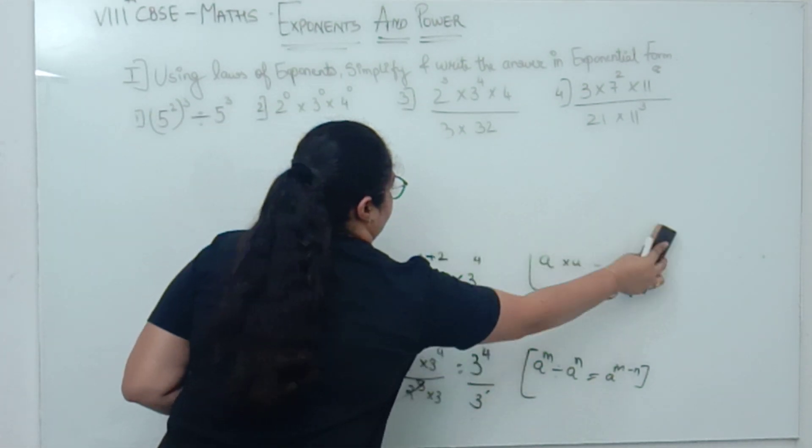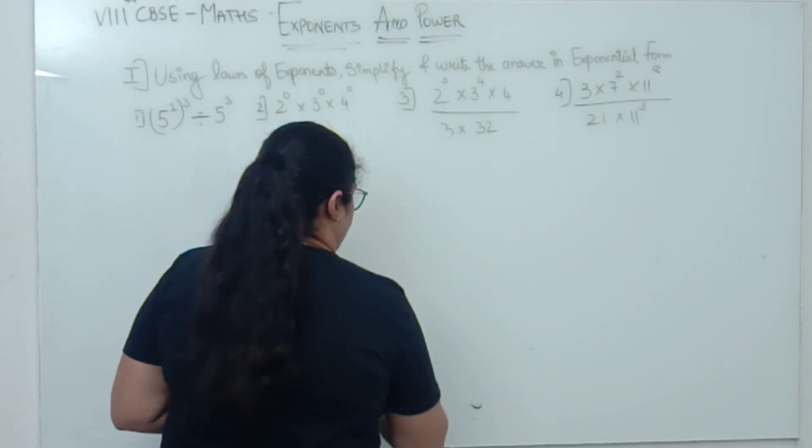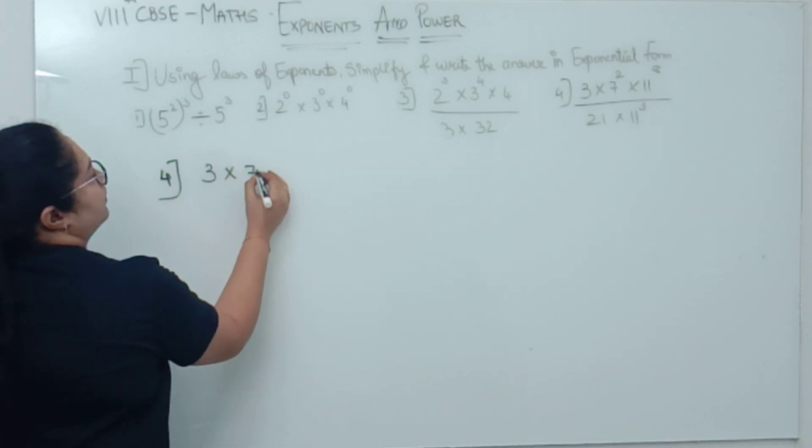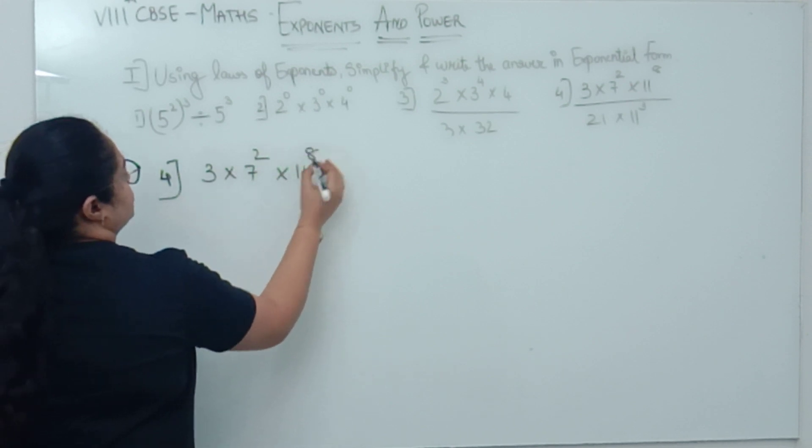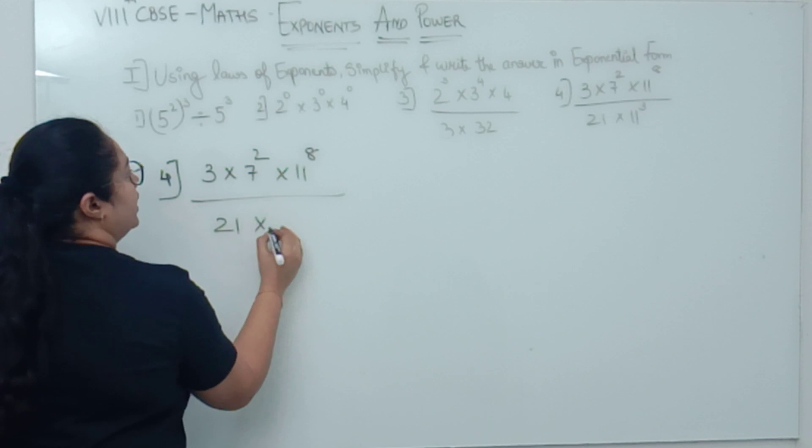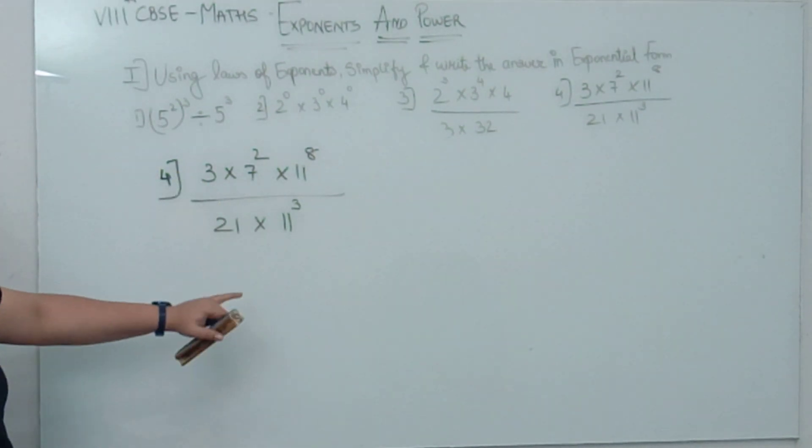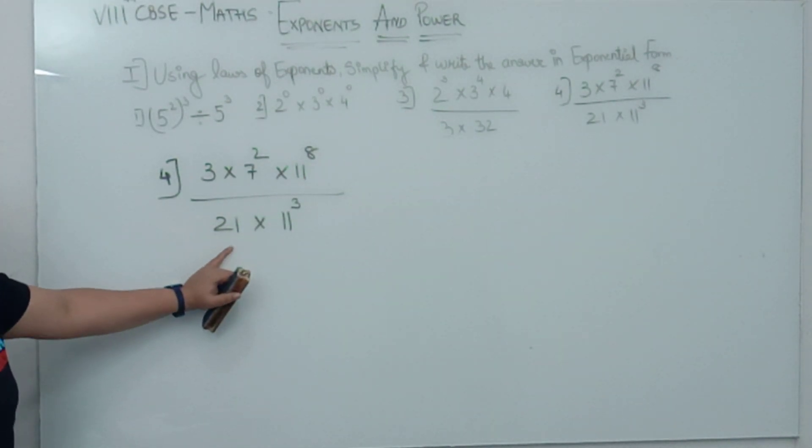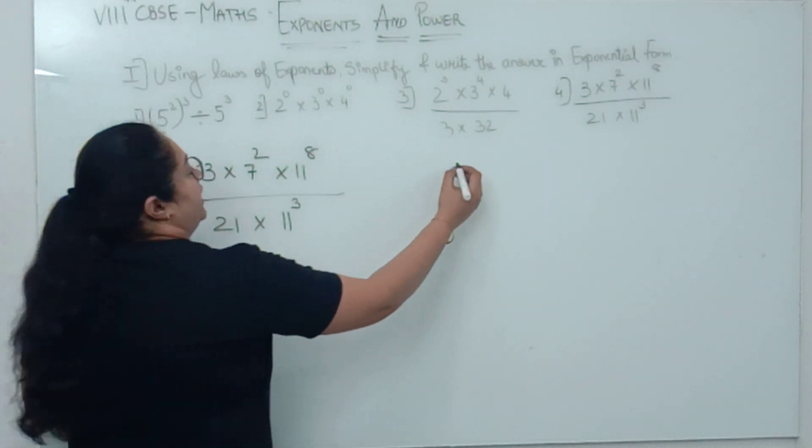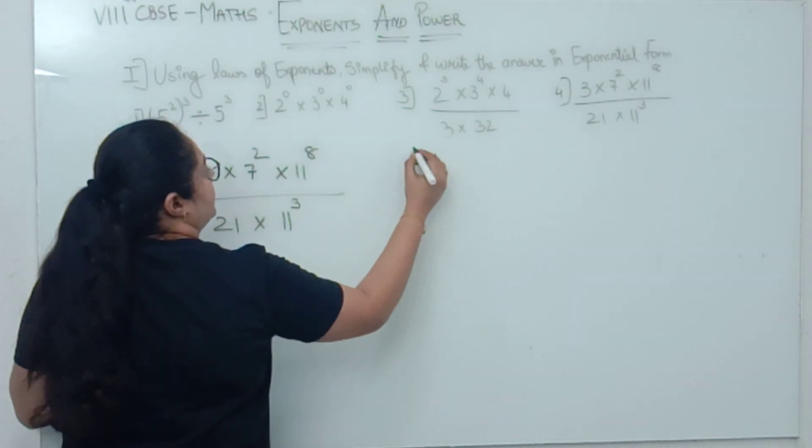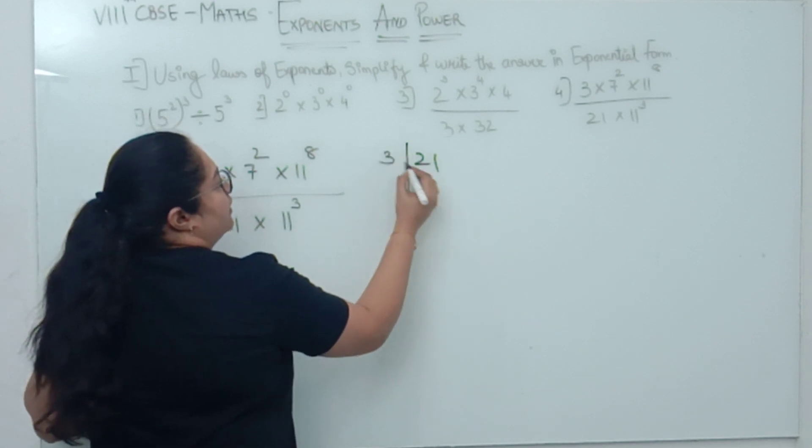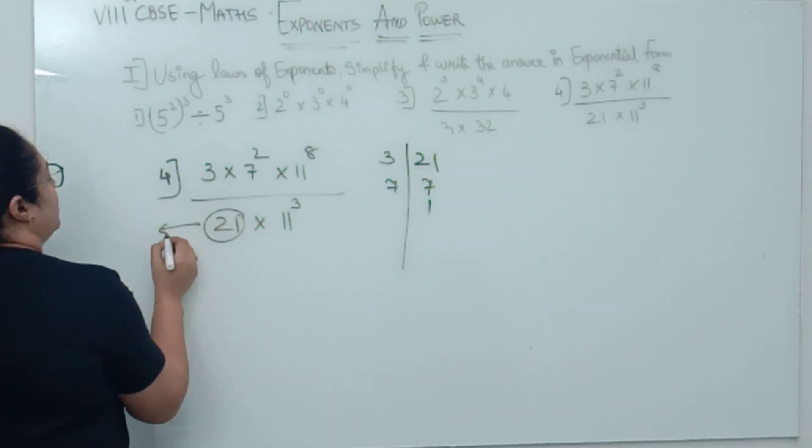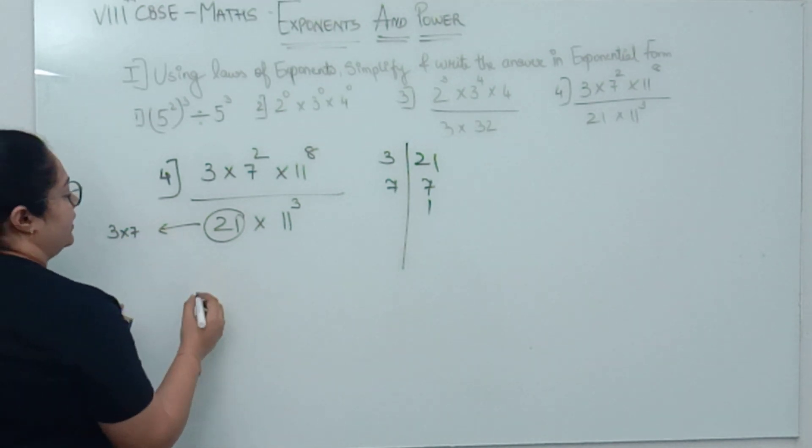Let us see the 4th sum. The 4th sum says, 3 × 7² × 11⁸ upon 21 × 11³. Now 3 will remain as it is. 7 as it is. 11 you cannot prime factorize. 21? Yes, you can prime factorize 21. 3 goes into 21 giving 7, and 7 goes into 7 giving 1. So how can you write 21? 21 can be written as 3 × 7.